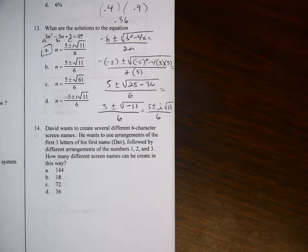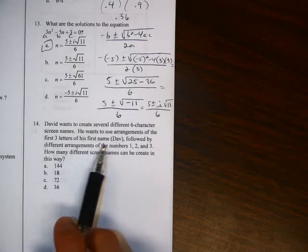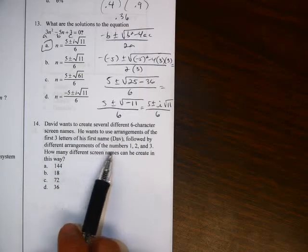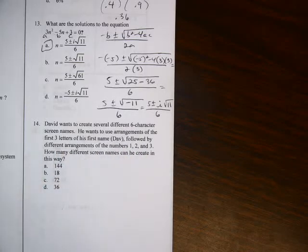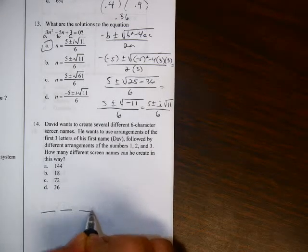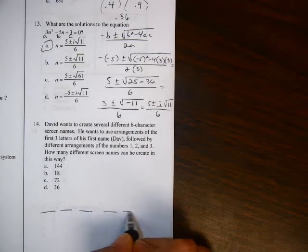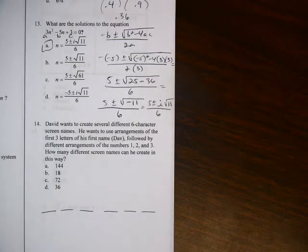The last one in this video, number 14. David wants to create several different 6-character screen names. He wants to use arrangements of the first 3 letters of his name, DAV, followed by different arrangements of the numbers 1, 2, and 3. How many different screen names can he create in this way? So we've got our decision chart. The first 3 represent the letters. The last 3 represent the numbers.